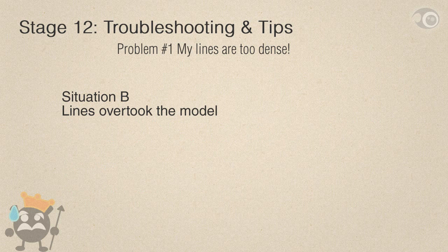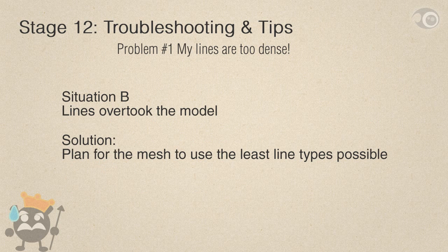Situation B: lines overtake the model in the render, making the solid shading covered by lines. To solve this, you have to lessen the edges selected for the line rendering. You should try to plan for the mesh to use the least line types possible. Almost all the examples in this course have that in mind, so indirectly you have already been taught to do this.